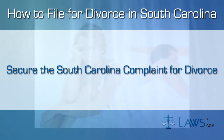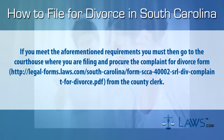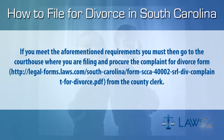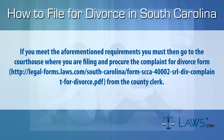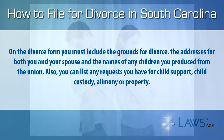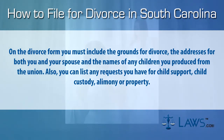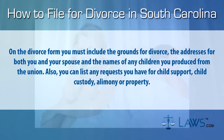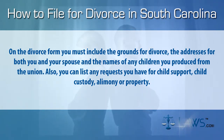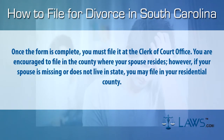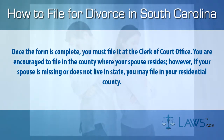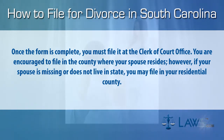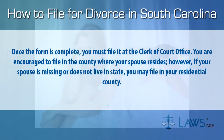Step two: secure the South Carolina complaint for divorce. If you meet the aforementioned requirements, you must then go to the courthouse where you are filing and procure the complaint for divorce form from the county clerk. On the divorce form, you must include the grounds for divorce, the addresses for both you and your spouse, and the names of any children you produced from the union. You can also list any requests you have for child support, child custody, alimony, or property. Once the form is complete, you must file it at the clerk of court's office. You are encouraged to file in the county where your spouse resides. However, if your spouse is missing or does not live in state, you may file in your residential county.